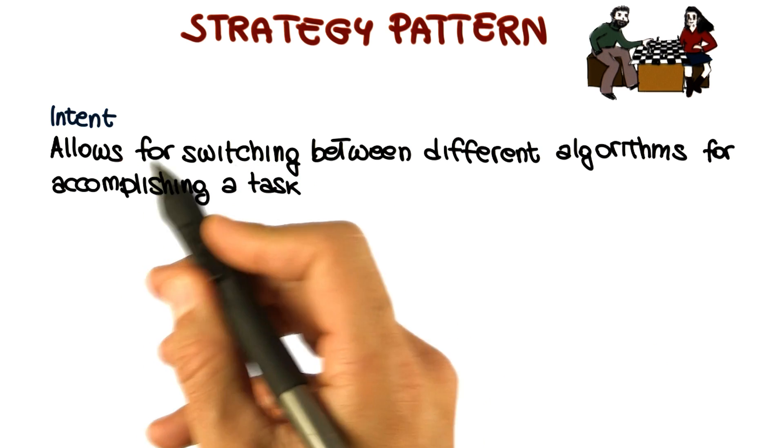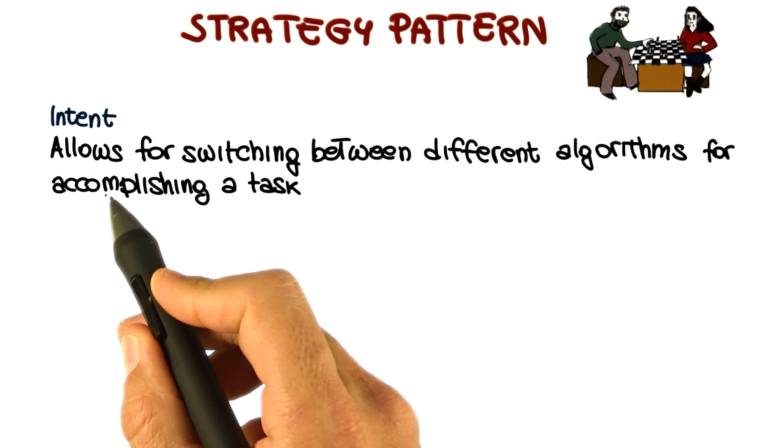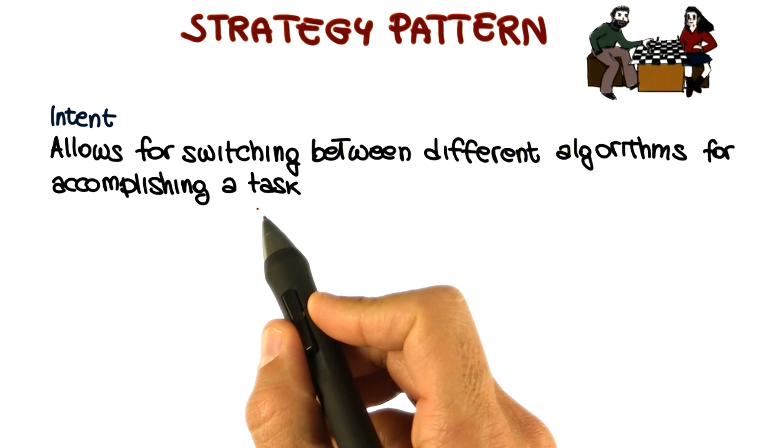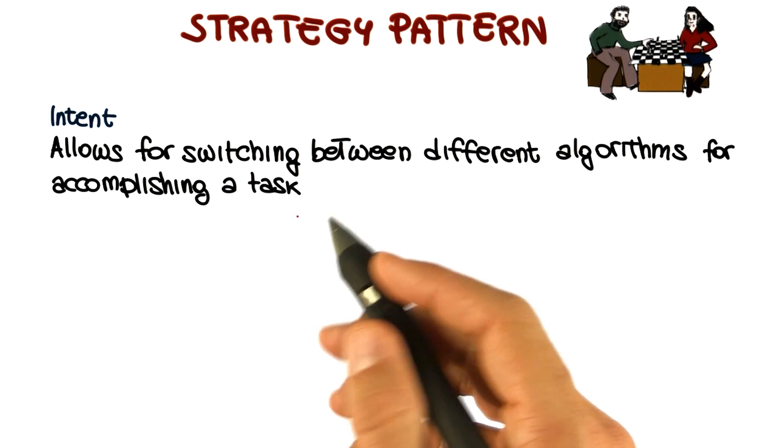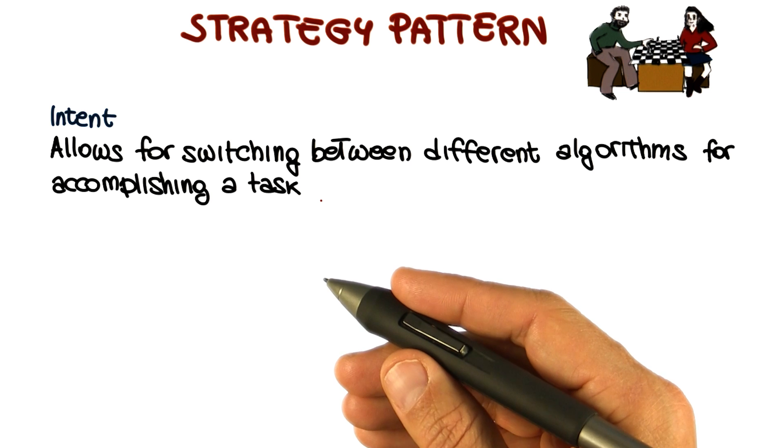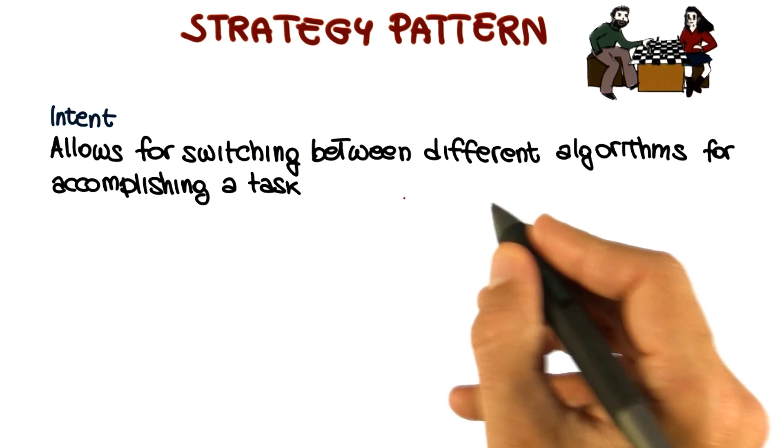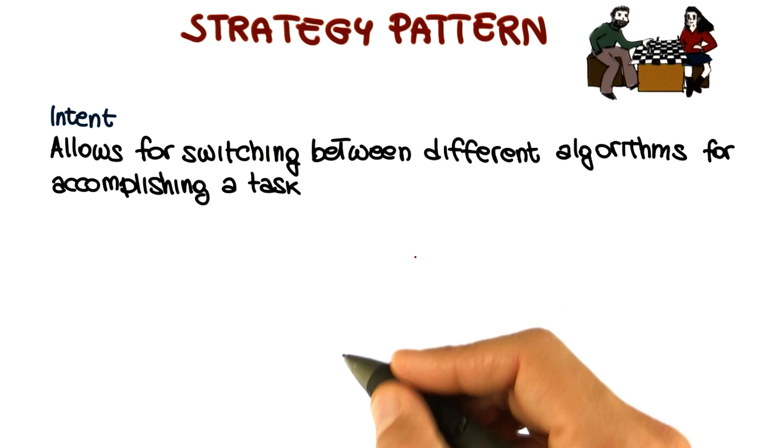So in essence, the intent of a strategy pattern is to allow for switching between different algorithms for accomplishing a given task. For example, imagine having different sorting algorithms with different space or time trade-offs. You might want to be able to have them all available and to use different ones in different situations.